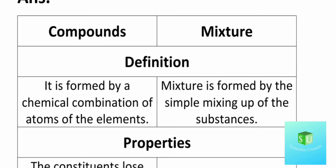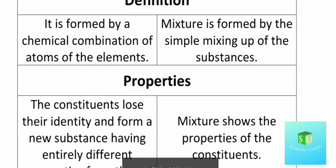When you have this question, you have to make two columns — on one side compounds, on the other side mixtures. The first point is the definition. A compound is formed by the chemical combination of atoms and elements; they react chemically and a new substance is formed — that new substance is called a compound. A mixture is formed by the simple mixing of two or more substances; the resulting product is called a mixture. It is not a chemical change — it can be a physical change.